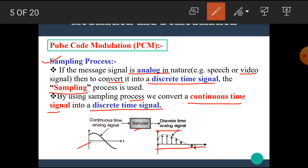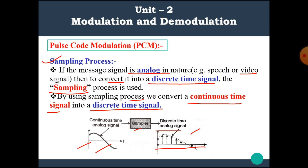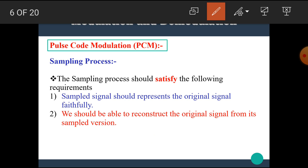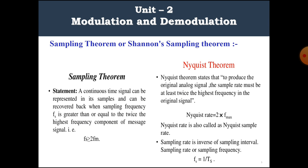The difference between continuous time analog signal and discrete time analog signal is important to understand. The sampling process should satisfy the following requirements: the sampled signal should represent the original signal faithfully, and we should be able to reconstruct the original signal from its sampled version.